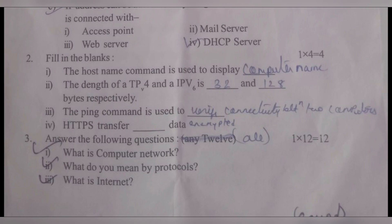The length of IPv4 and IPv6: IPv4 is 32 bits, which equals 4 bytes. IPv6 is 128 bits, which equals 16 bytes. So the correct answers are 4 bytes for IPv4 and 16 bytes for IPv6.